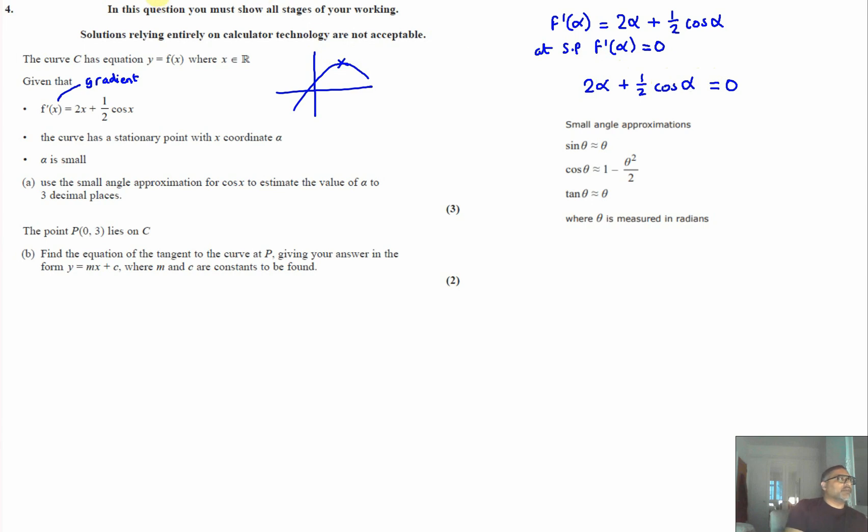What we can do then is replace cos alpha with this working here. We get 2 alpha plus a half times 1 minus alpha squared over 2 equals zero. Let's expand and simplify. That gives us plus a half, and then if I times a half by minus alpha squared over 2, that gives us minus alpha squared over 4 equals 0.